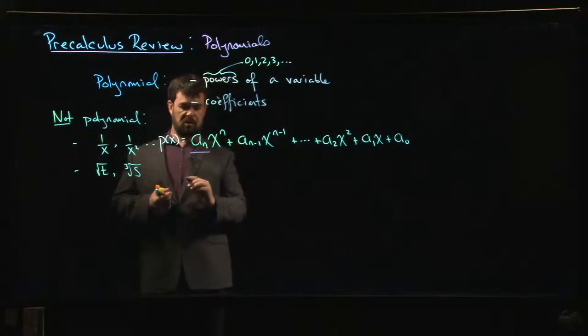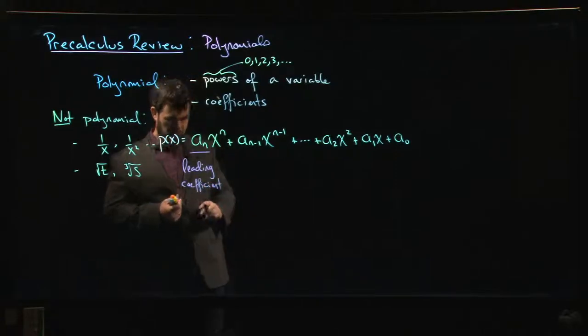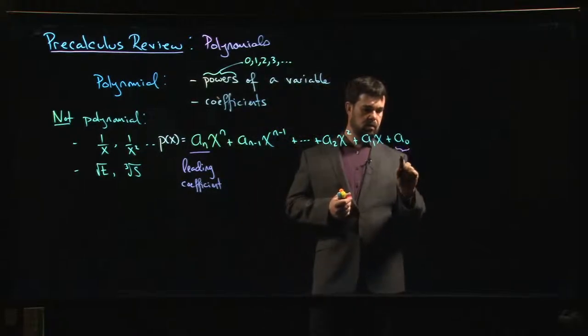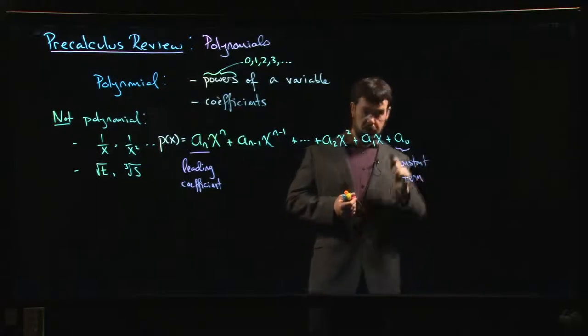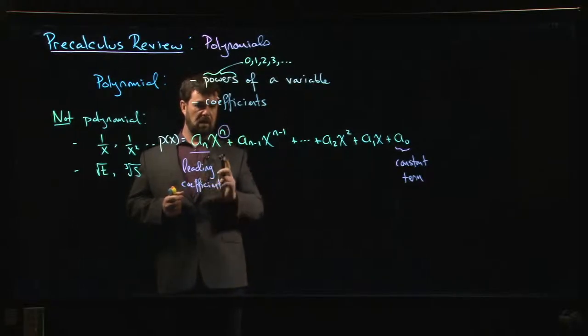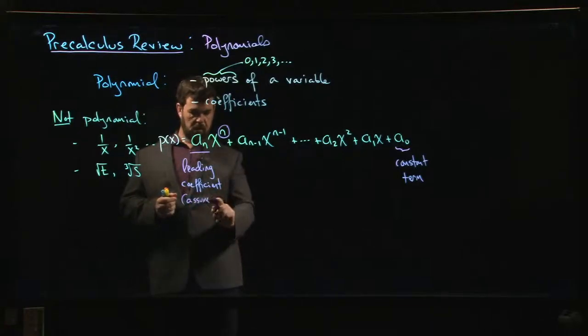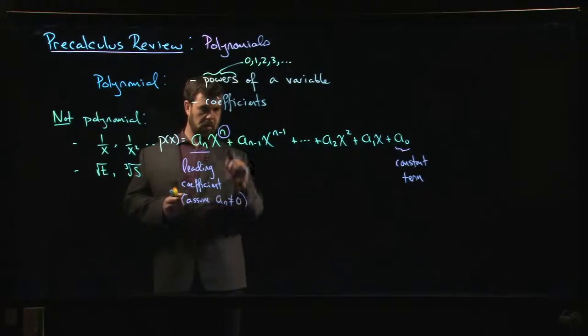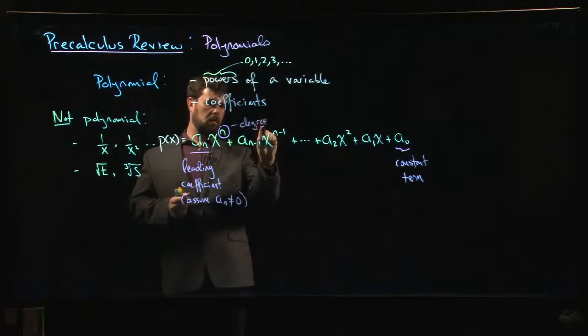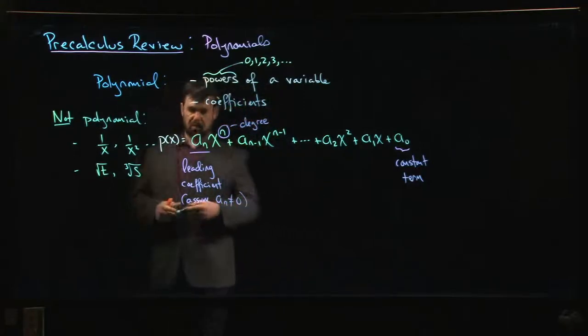This a_n is sometimes called the leading coefficient. A_0 is called the constant term - it's the only one that doesn't have the variable in it. This number here n, assuming that this leading coefficient is non-zero, this number n is called the degree of your polynomial. So those are some basic terms that you'll see associated with polynomials. Let's do a few examples.